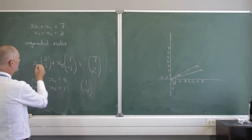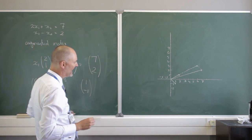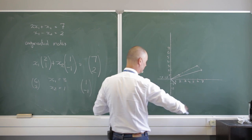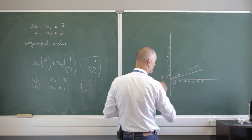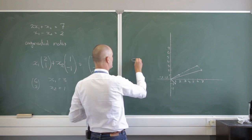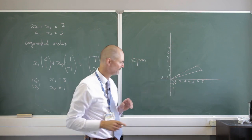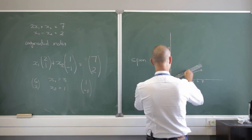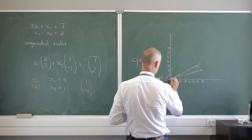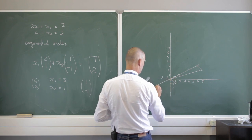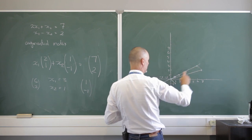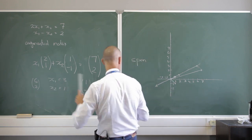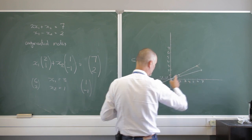That is a linear combination of these column vectors giving me a third vector. You can see that these two vectors, through linear combinations, can get me anywhere in the plane — they span the whole two-dimensional space. If my second vector were along the same line as the first, no linear combination of them would get me off that line, so they would not span two-dimensional space.